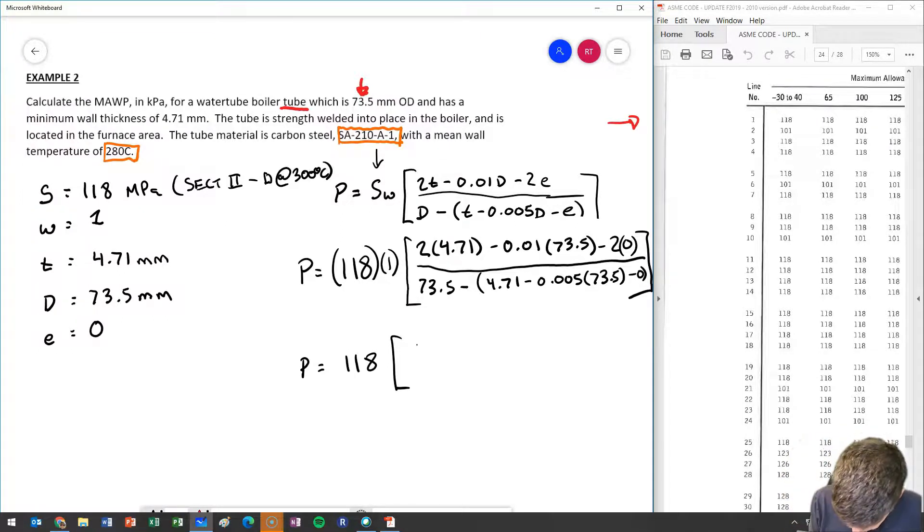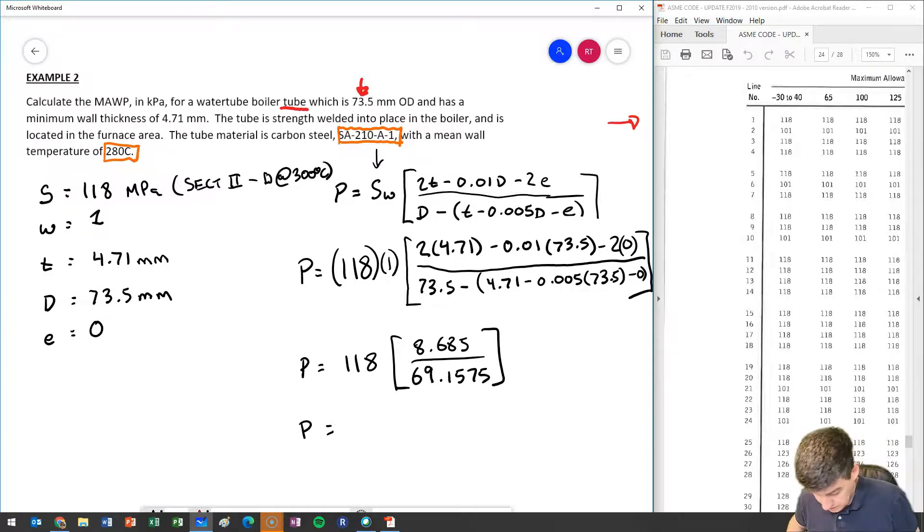So 2 times 4.71 minus 0.01 times 73.5 gives me 8.685 on the numerator. 73.5 minus 4.71 minus 0.005 times 73.5 gives me 69.1575 on the denominator. And my P in this case, 118 times 8.685 divided by 69.1575.